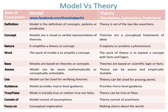Models are a visual or verbal representation of theories. Whereas, theories are a conceptual framework of ideas. The nature of a model is that it simplifies a theory or concept. Whereas, the nature of theory is that it explains or predicts a phenomenon.